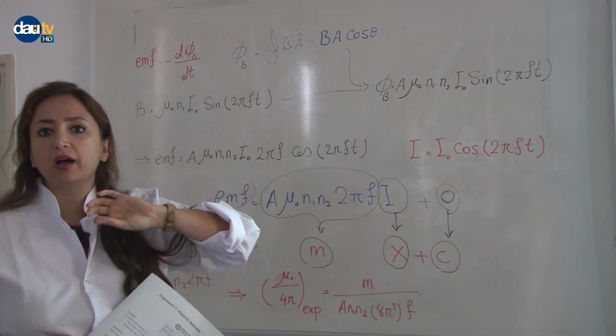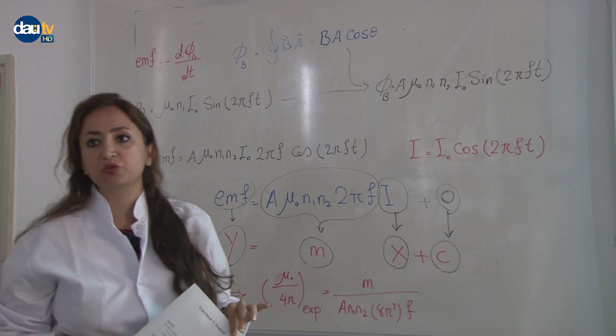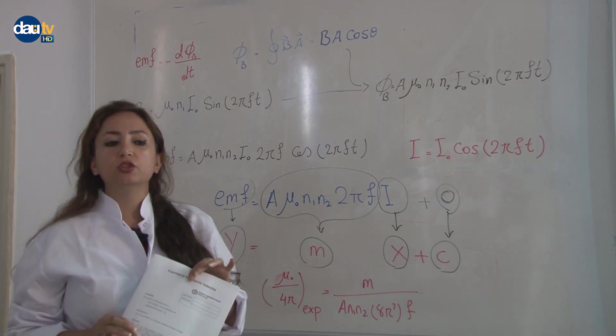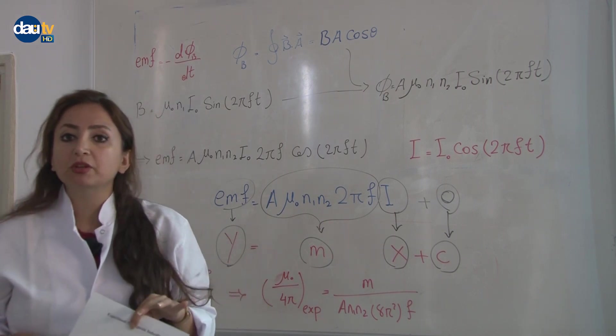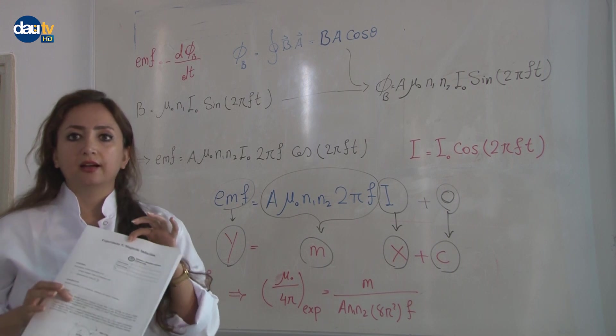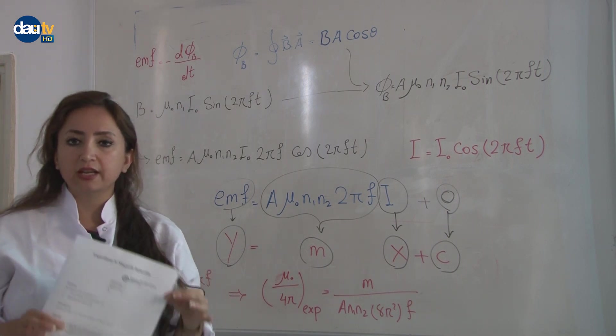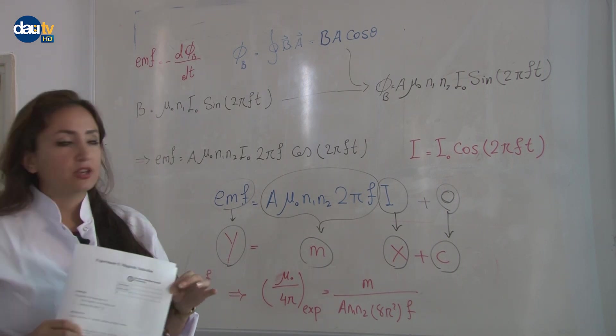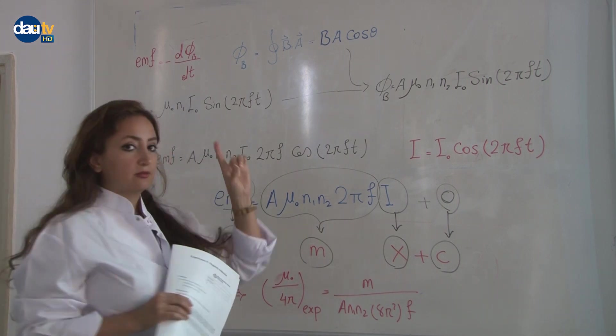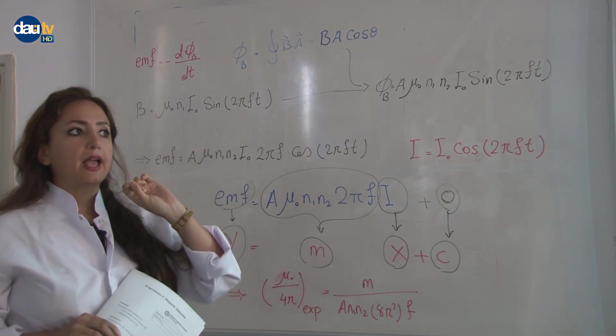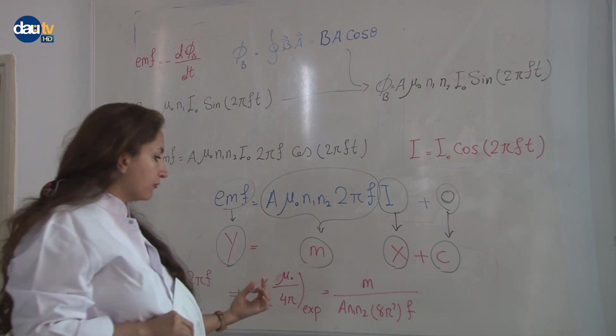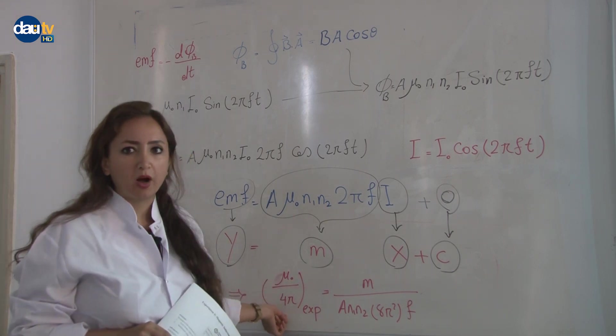I want to explain a bit about the theoretical part of this experiment. Then we will go to doing the experiment together and define our measure and data and do our calculation. Actually, first let me say the aim of this experiment is defined in mu zero over four pi.